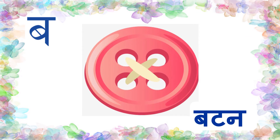Now come to the next picture. The third picture is B — Button. Bursay Button. All of you must have seen buttons on your shirt, in your uniform. We should always button up in order to look smart. So it's B — Button. Bursay Button.